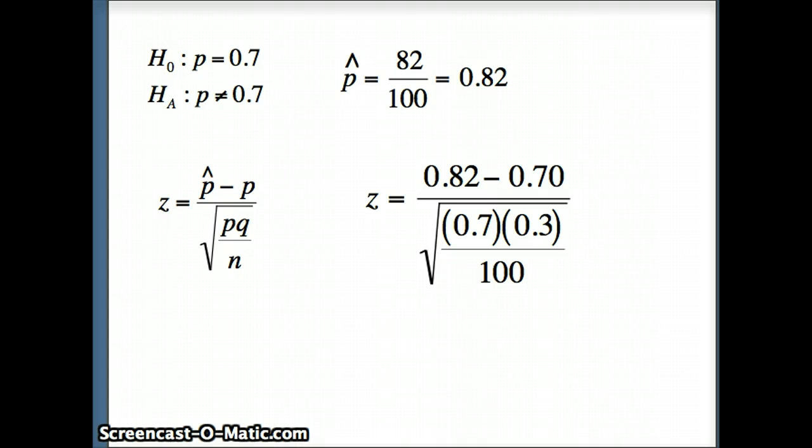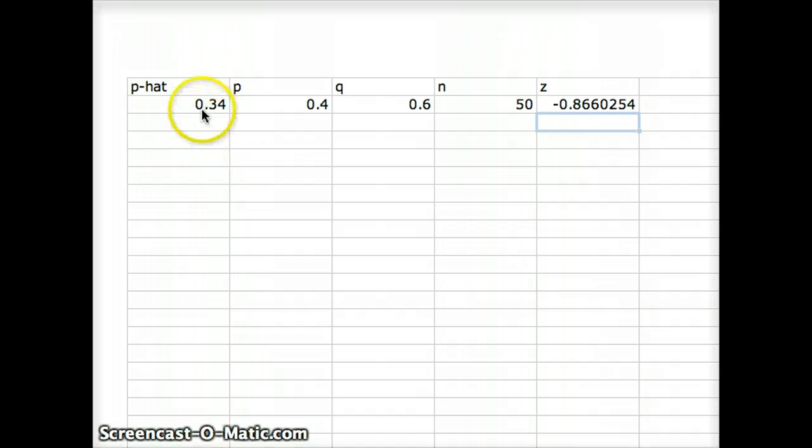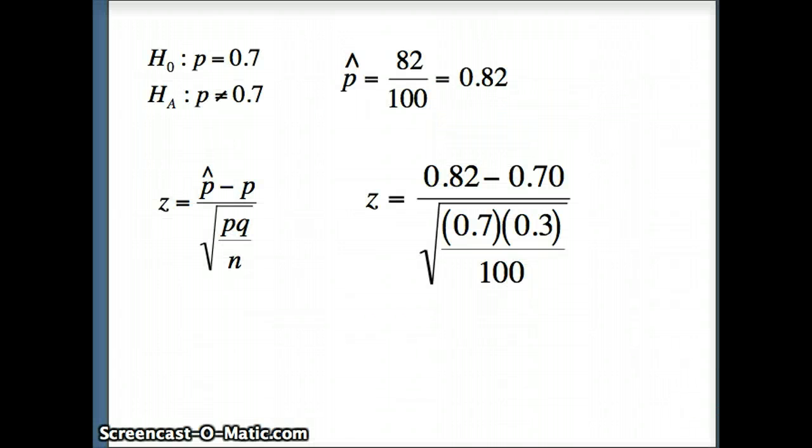So p-hat is 0.82 and p is 0.7. q, of course, is 1 minus p, so q will be 0.3. And n, I believe, this time was 100. We had 100 trials. And the nice thing about this that you'll notice is that z is automatically computed. It's using the same line of code that we used last time. So our z value here, our test statistic, 2.6186, or rounding it to 2.619.